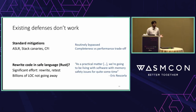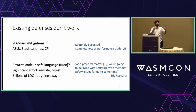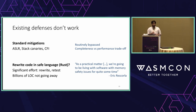Our existing defenses against these threats don't really work. We have things like ASLR, stack canaries, and CFI as mitigations — they definitely introduce speed bumps for attackers, but they are ultimately routinely bypassed. We could try to rewrite all our code from C to Rust, and we should when we can, but it's not a simple matter of translating syntax. You have to redesign libraries, test for performance, ensure feature parity, and run regression tests. Billions of lines of existing C code are not going to go away anytime soon, so we are going to have to live with some C code.